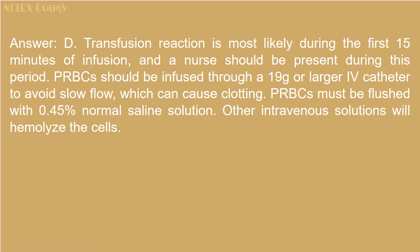Answer: D. Transfusion reaction is most likely during the first 15 minutes of infusion, and a nurse should be present during this period. PRBCs should be infused through a 19G or larger catheter to avoid slow flow, which can cause clotting. PRBCs must be flushed with 0.45% normal saline solution. Other intravenous solutions will hemolyze the cells.